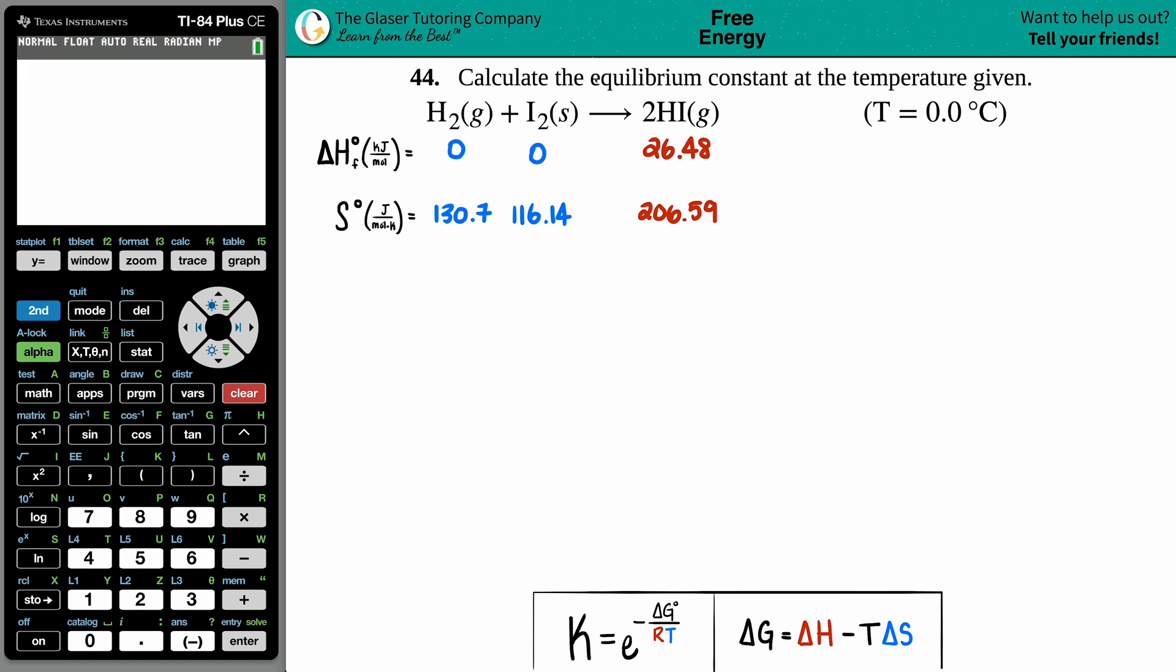Number 44: Calculate the equilibrium constant at the temperature given. We have H₂ gas plus I₂ solid yields 2HI gas at a specific temperature, zero degrees Celsius. From that information we want to find out the equilibrium constant, which is capital K.